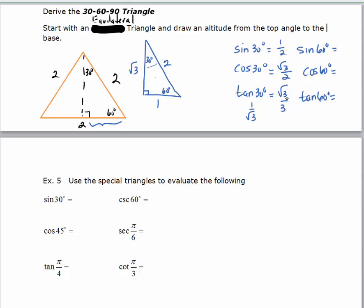Using the same triangle to find the trig functions of 60 degrees: the sine of 60 is the side opposite 60 over the hypotenuse, which is the square root of 3 over 2. The cosine of 60 is the adjacent side over the hypotenuse, which is 1 half. The tangent of 60 is opposite over adjacent: the square root of 3 over 1, or just the square root of 3. You can find the reciprocal functions — cosecant, secant, and cotangent — by taking the reciprocal of these three.